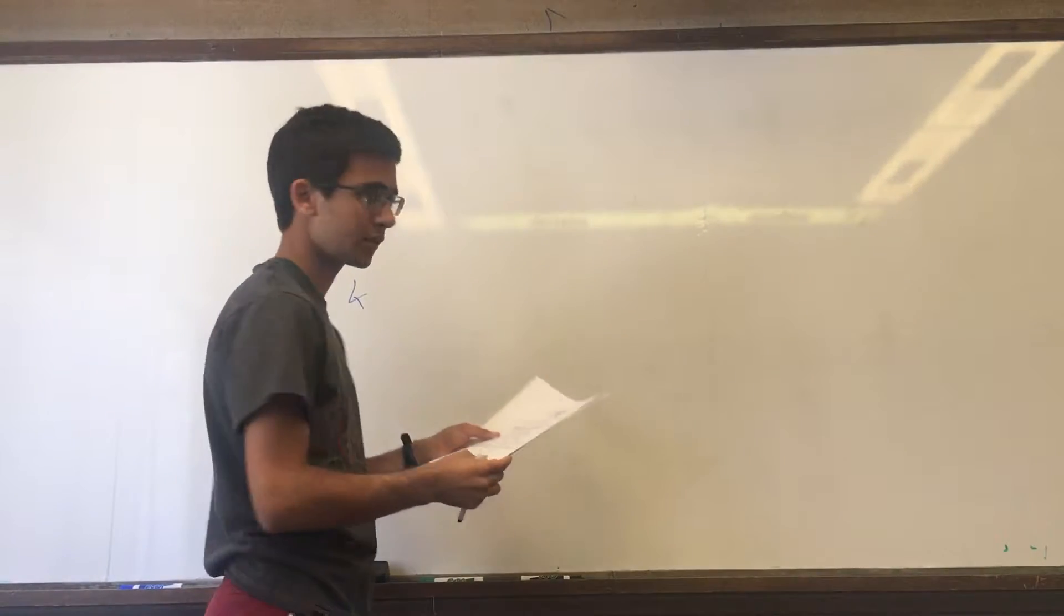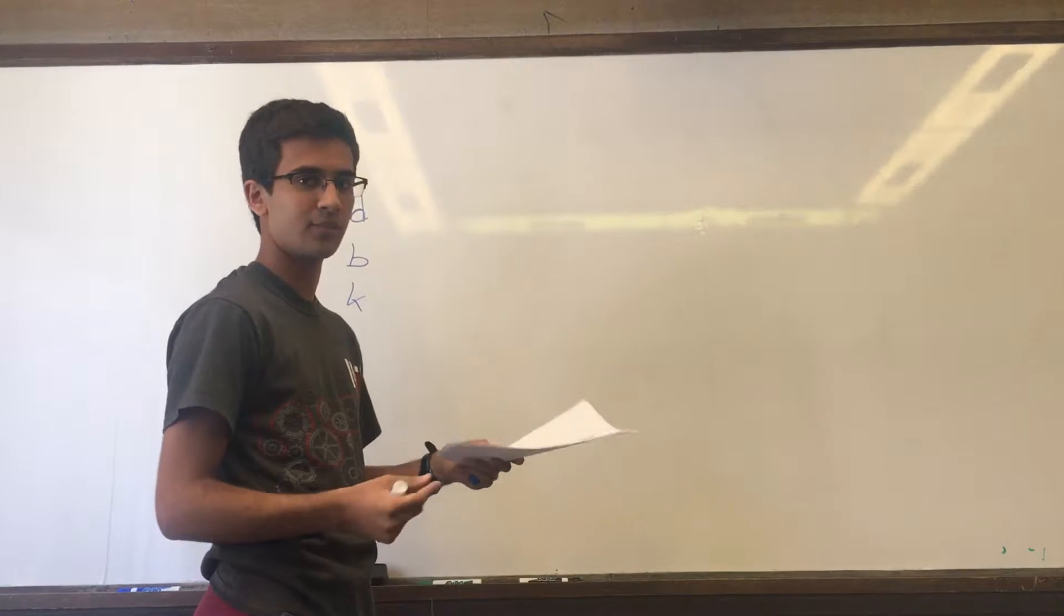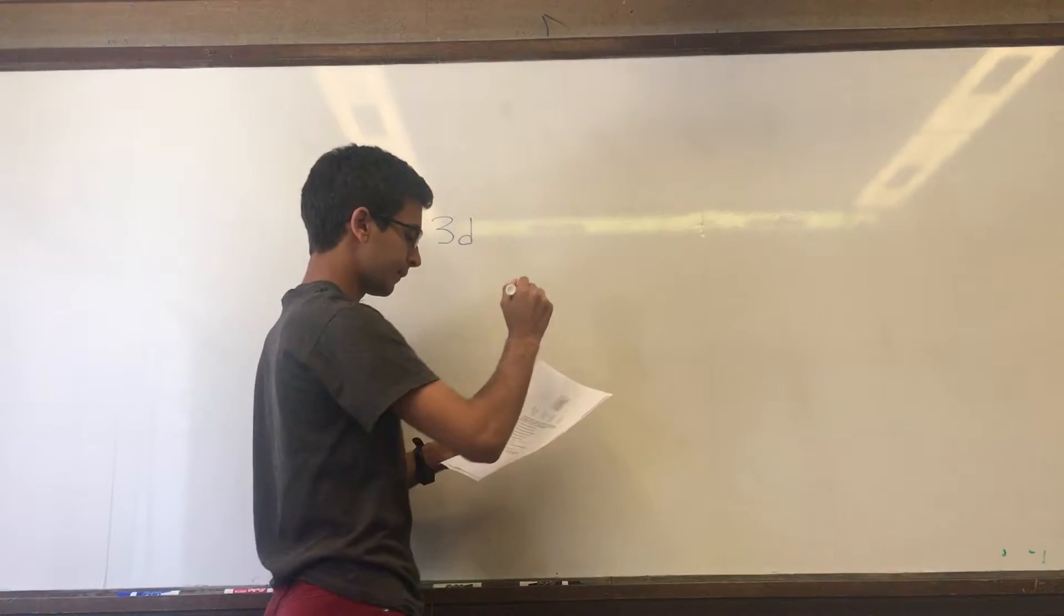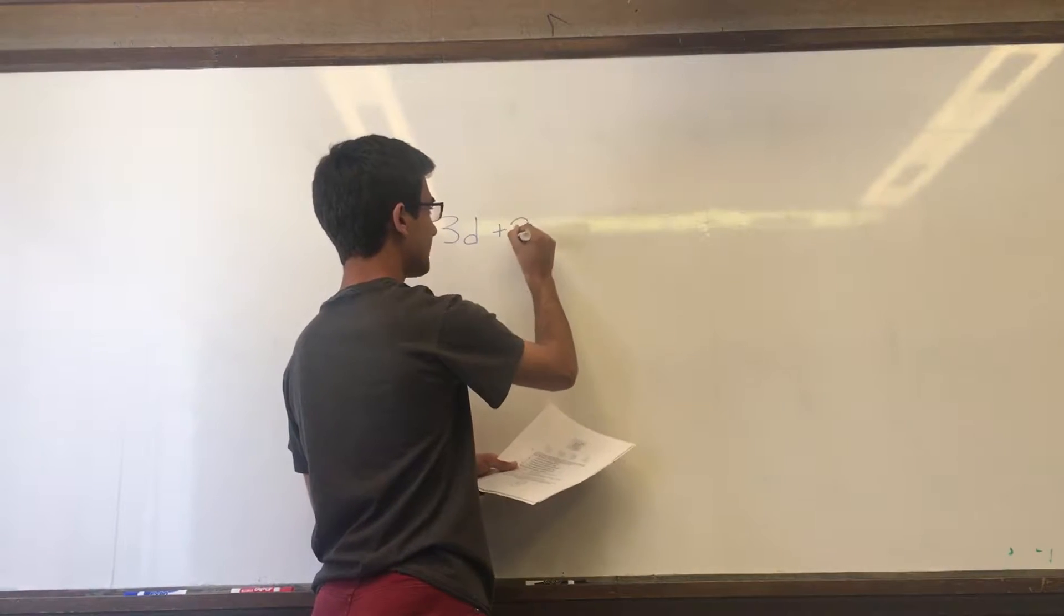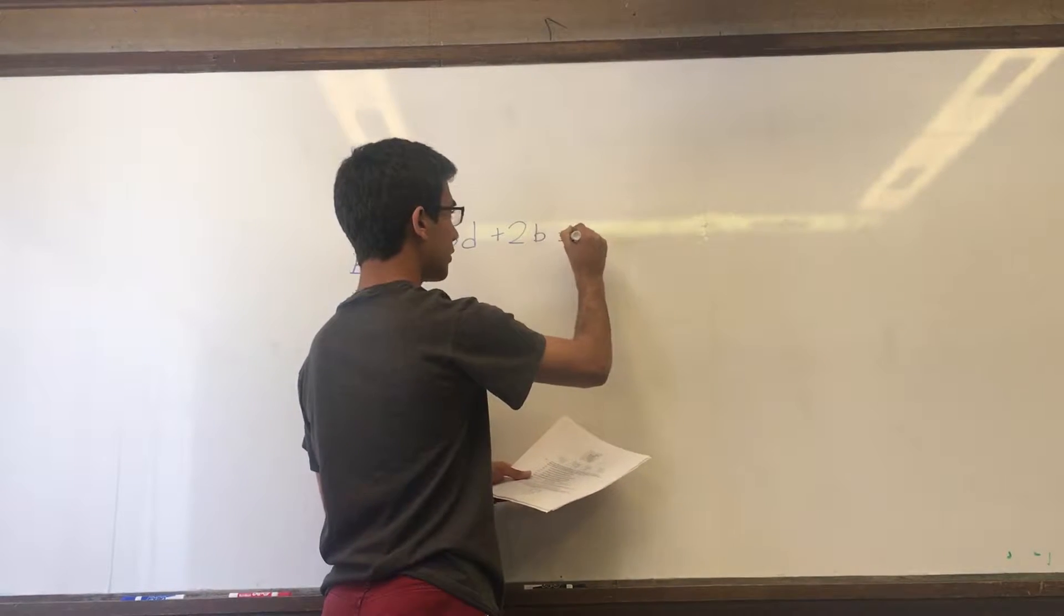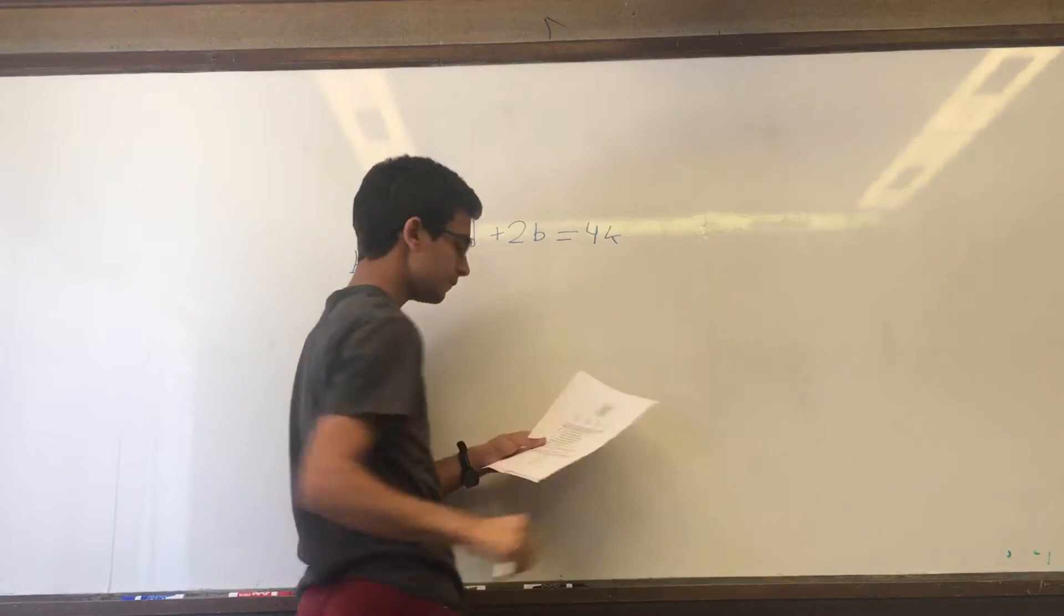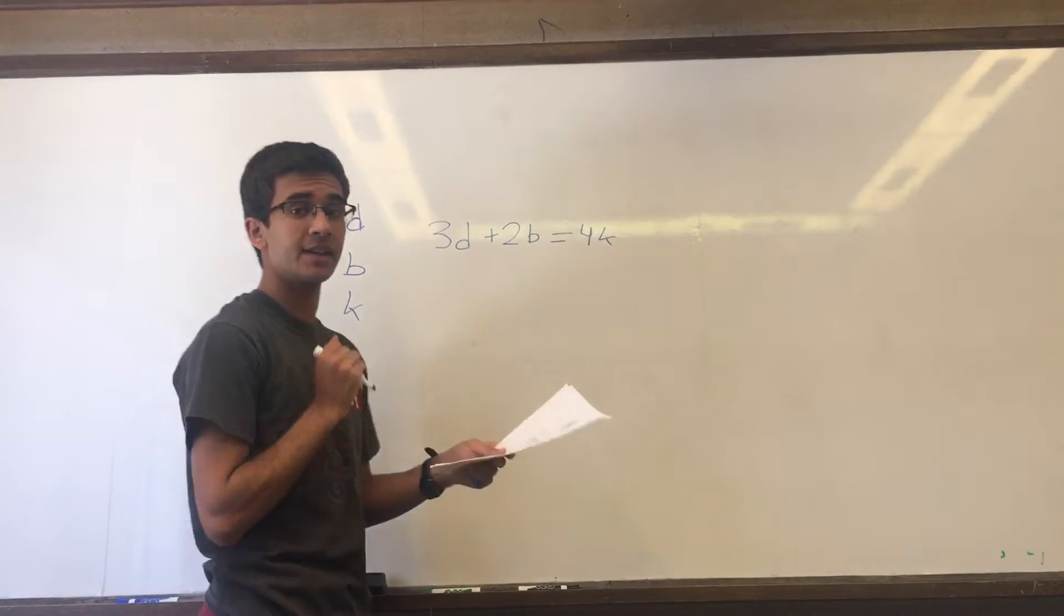So we can set up an algebraic expression: 3 times d plus 2 times b equals the price of four kangaroos, which will be 4k. Now we also know for the same amount of money you can buy one dog and three bears.